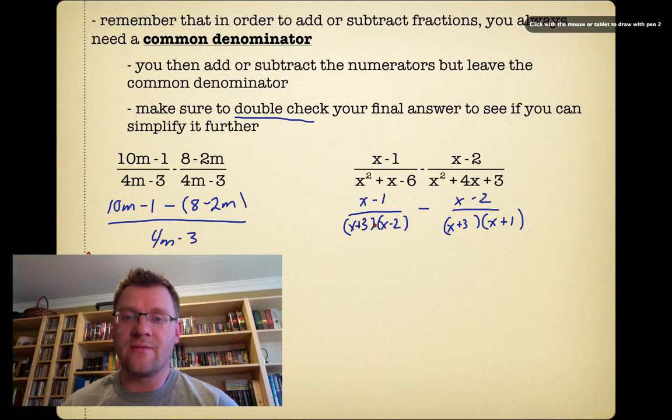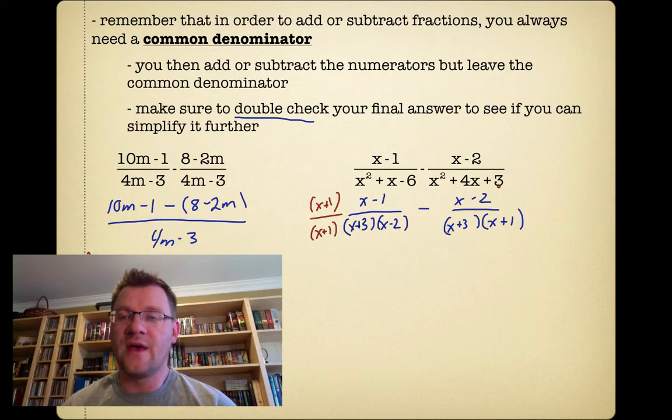The x plus 3 is common here and the x plus 3 is common there. But this one has an x minus 2 and this one has an x plus 1. So what we're going to do is multiply this first fraction by x plus 1. And I'm going to do that to the top and the bottom, just like you would with regular fractions. And I'm going to multiply this one by x minus 2.